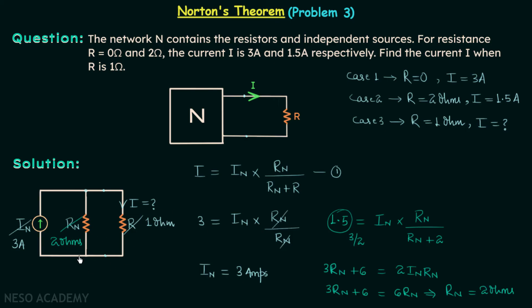With these values, current I will be equal to 3 multiplied by 2 divided by 2 plus 1. From here we will have current I equal to 2 amperes. This is our answer. So when R is equal to 1 ohm, I is going to be 2 amperes.